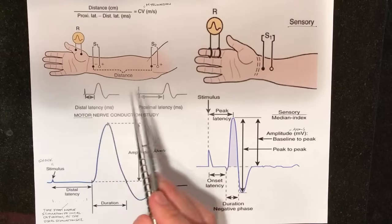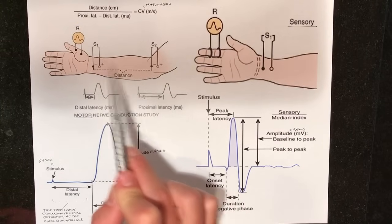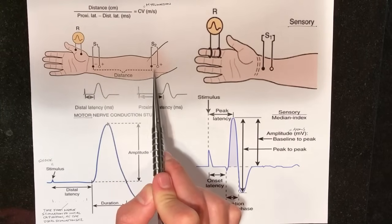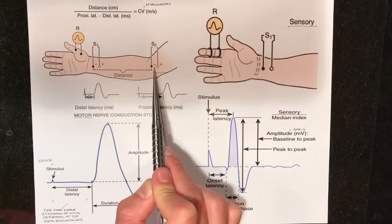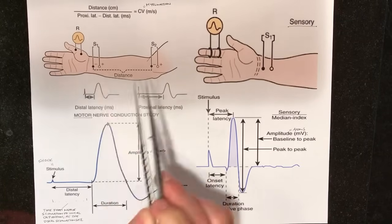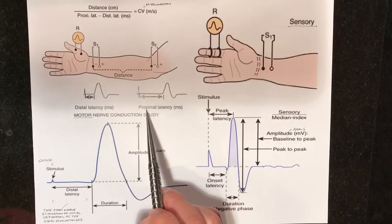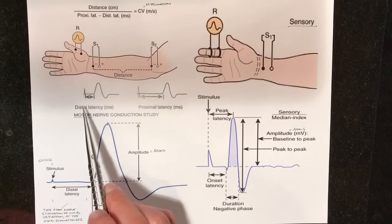Let's start with the motor study. In this case, this is a median nerve study. What is S2? What is S1? S2 is the proximal nerve stimulation site. What happens is you take the patient's arm and shock them with an electrical impulse at S2, and also shock them at a different time at S1. S2 is the proximal stimulation site and S1 is the distal stimulation site.